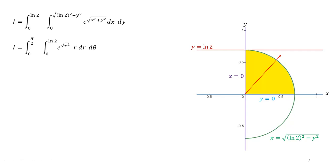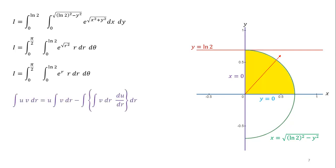To convert this integral into polar form, we replace x squared plus y squared with R squared, and replace dx dy with R dR d theta. This gives us the integral from 0 to pi over 2, and from 0 to ln 2, of e raised to the power R squared, times R dR d theta. To calculate the integral with respect to R we apply the integration by parts formula, since we have two functions depending on R where simplification is not directly possible.